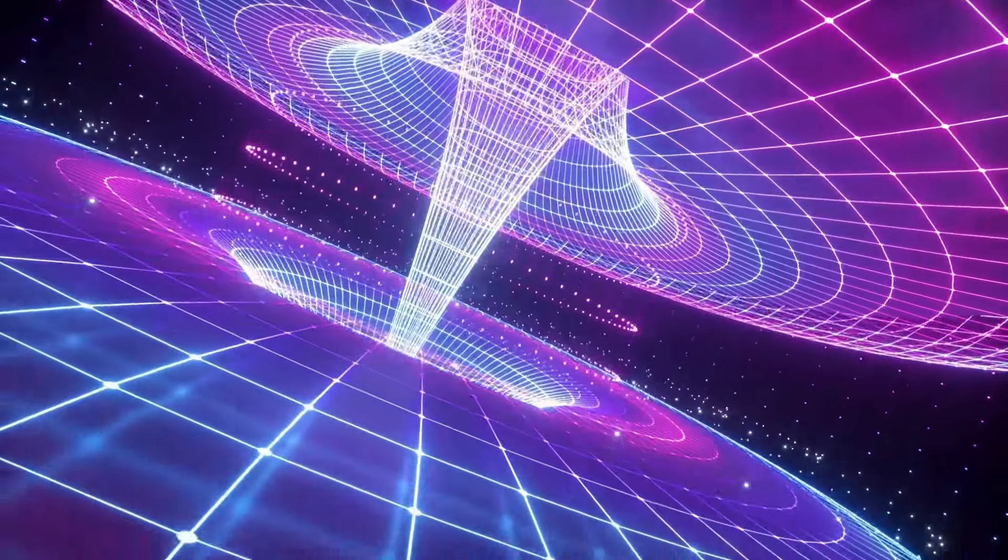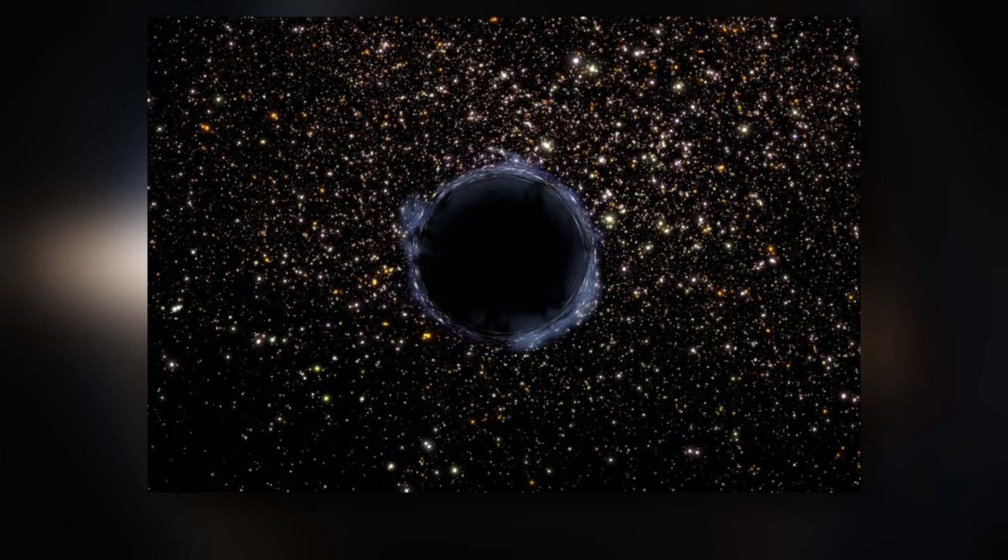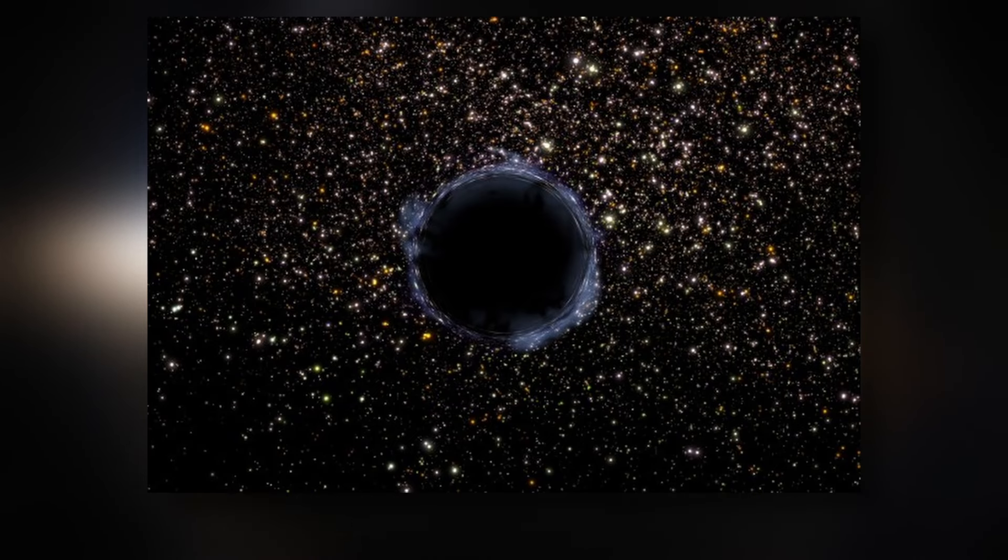Black holes do not suck objects in. Instead, they wrap space-time around them. The nearest known black hole to Earth is V616 Monocerotis. You don't have to worry about this yet—it is about 3,000 light-years away from us.